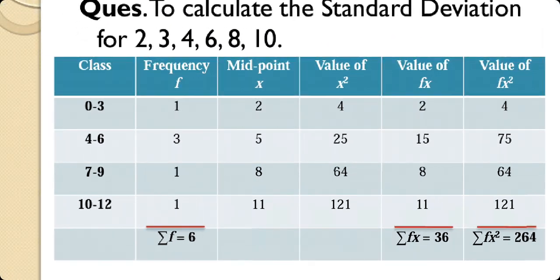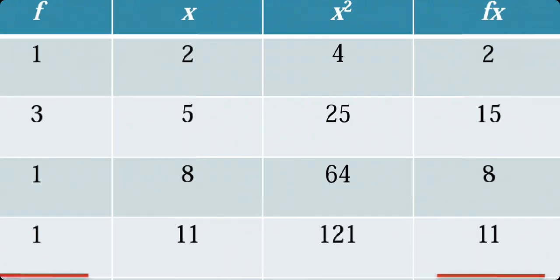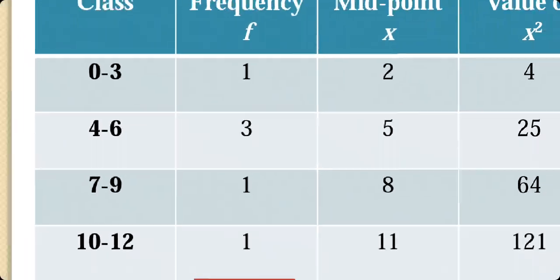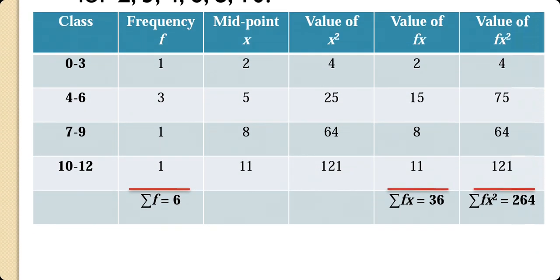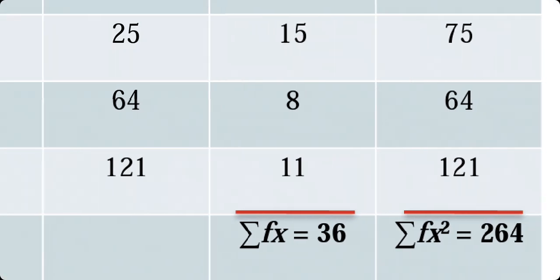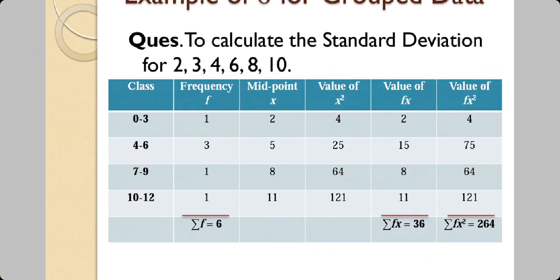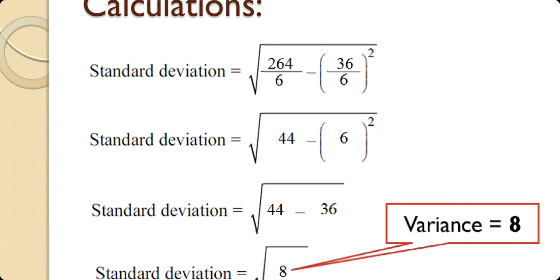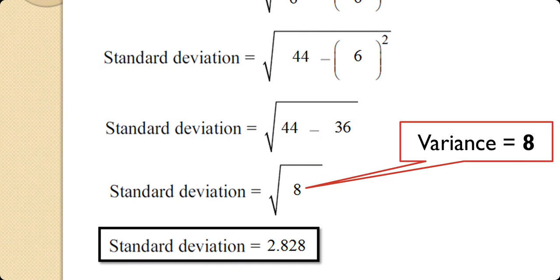Then calculate fx²: multiply f by x² to get 4, 75, 64, 121, giving Σfx² = 264. Substitute into the formula and simplify until you get a single value under the square root — that value without the root is the variance. Taking the square root gives the standard deviation, which in this case is 2.282 (rounded to 2.83).